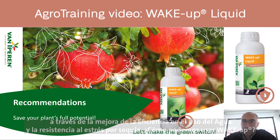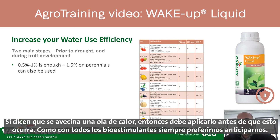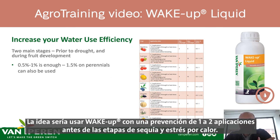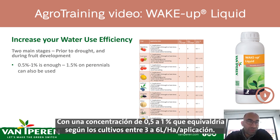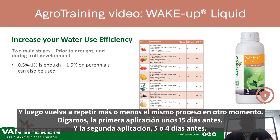How do we use it? There are two main stages. First, you can use it preventively — if you expect drought stress upcoming, for example by watching meteorological news and seeing that a heat wave is coming, the ideal thing is to anticipate, as with all biostimulants. You would use Wake Up in prevention: one to two applications before the stages of drought and heat stress at a 0.5 to 1% concentration, equivalent to approximately three to six liters per hectare per application. You would apply roughly 15 days before, and then again four to five days before the stress event.